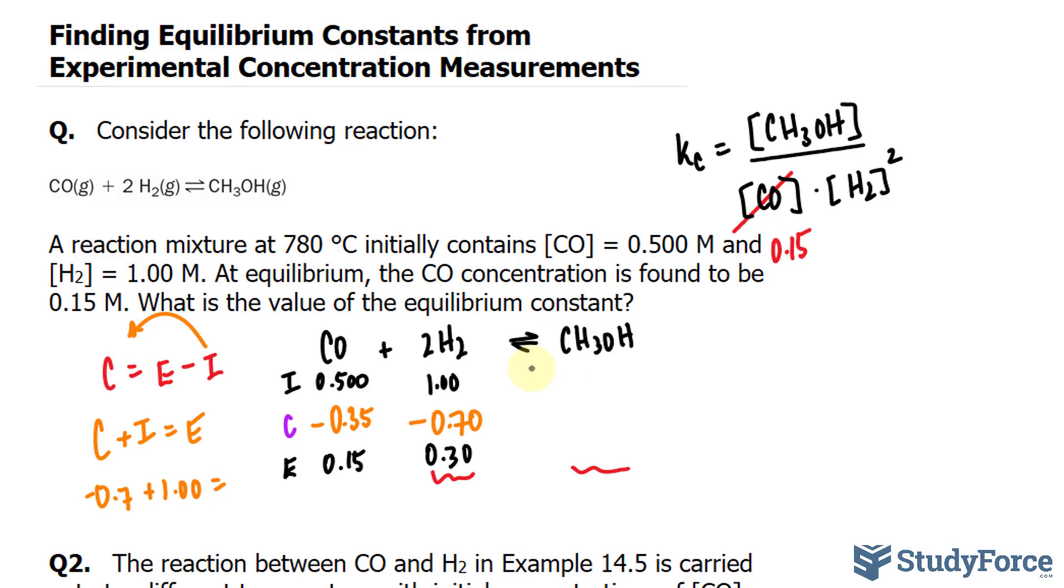Again, we have to do this for this molecule. So for every one molecule of CO, we have one molecule of CH3OH. But since this is on the opposite side of the equation, we disregard the negative. So if this were positive, then this becomes negative. Given that it's negative, this should be positive. It's a one-to-one ratio, so we have 0.35.